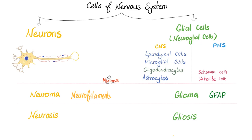The glial cells in the central nervous system include ependymal cells, microglial cells, oligodendrocytes, and astrocytes. Ependymal cells lie in the choroid plexus and secrete cerebrospinal fluid. Microglia is the macrophage of the CNS — called monocytes in blood, macrophages in tissue, Kupffer cells in the liver, and microglial cells in the brain. Oligodendrocytes make myelin for CNS fibers, and astrocytes contribute to the blood-brain barrier.